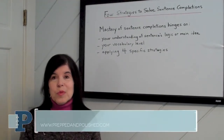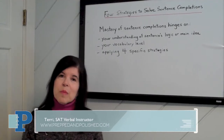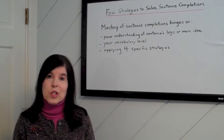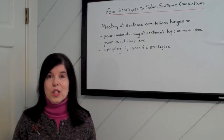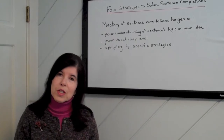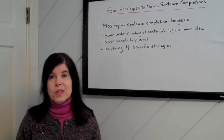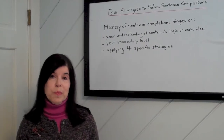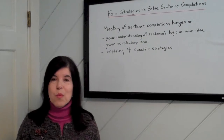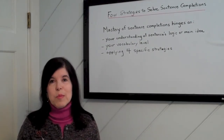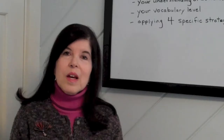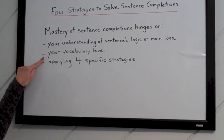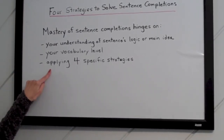Today I'm going to share some strategies to help you solve sentence completions on the SAT. Sentence completions are part of the critical reading section, along with reading comprehension passages. They are multiple choice questions that test your ability to see how parts of a sentence relate — you choose the word or words that best fit the meaning of the sentence as a whole. There will be 19 sentence completion questions divided into three groups of 8, 6, and 5. Within each group, difficulty goes from easy to hard. About half the questions will have one word missing, and the other half two words missing. Mastery hinges on your understanding of the sentence's logic, your vocabulary level, and four specific strategies I'll introduce today.